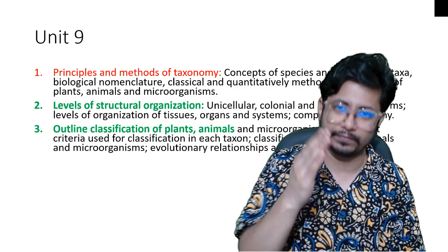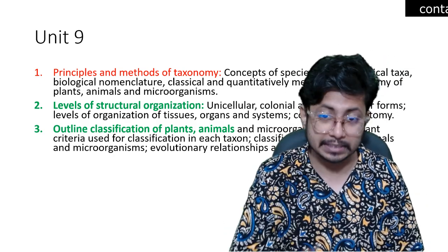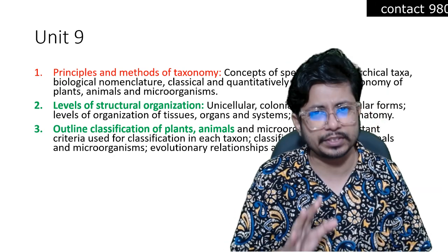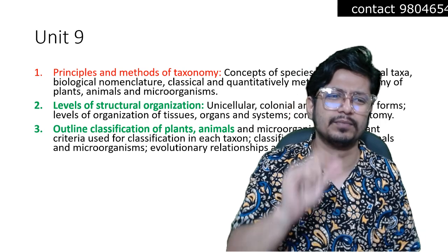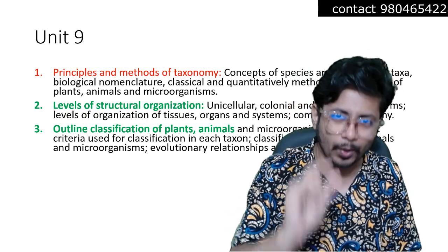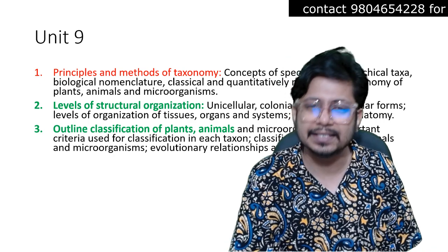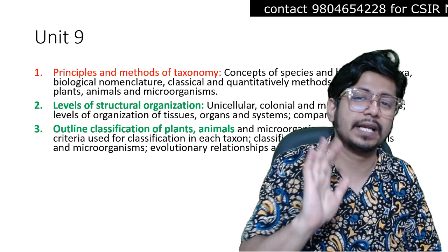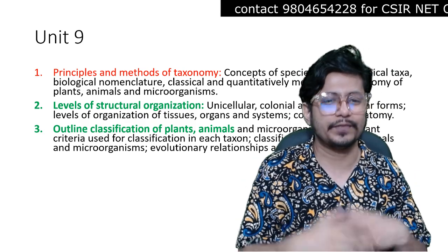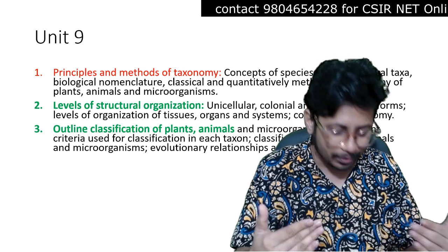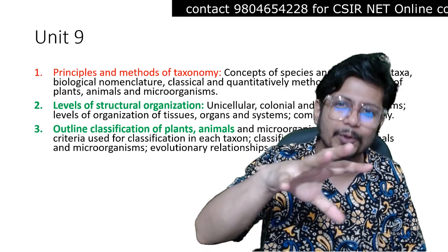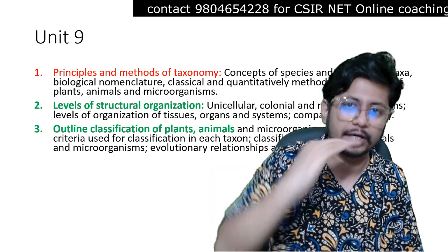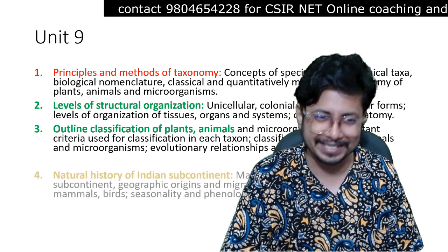Animal classification for invertebrates till phylum and vertebrates till class is important. Plant classification is equally important because questions have been asked from it every single time — it comes from hardcore classical botany. If you're not from that domain, you can ignore that part. Similarly, animal classification is from hardcore classical zoology, so if you're not from a zoology background, you can ignore that. Unit 9 overall, I put it in our red book — not that important for those from a modern biology background.